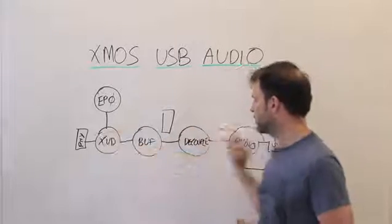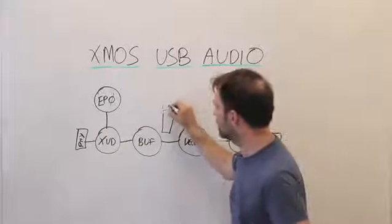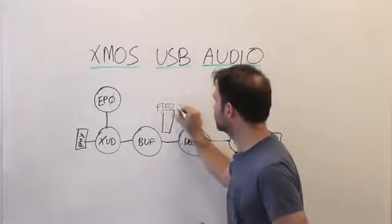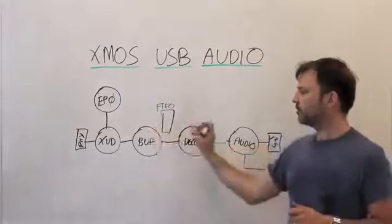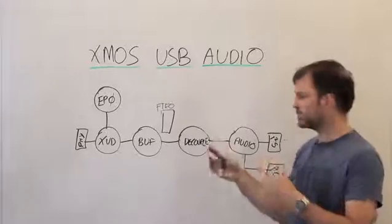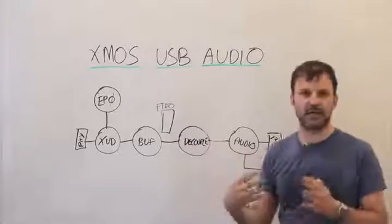And really what we have in the middle, because essentially these two are running at different rates, is a FIFO. It's a very short FIFO but it just handles the different rates between these two sides here and any jitter.